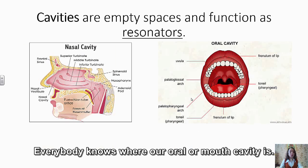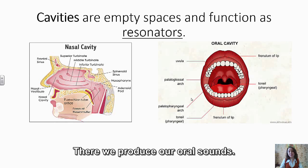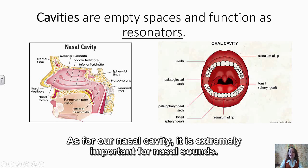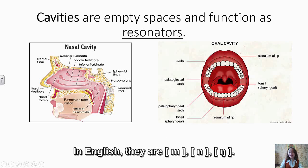Everybody knows where our oral or mouth cavity is. It produces our oral sounds, such as b, p, t, k, and so on. As for our nasal cavity, it is extremely important for nasal sounds. In English, they are /m/, /n/, and /ŋ/.